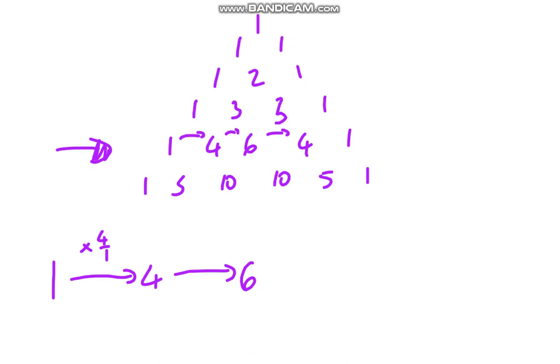Now if you want to get across to six, what fraction will you multiply by to get from four to six? Well, it's going to be three over two. Then to get to four, that's two thirds. To get to one, that's one over four. What do we notice? These numbers here are decreasing by one and these numbers are increasing by one.